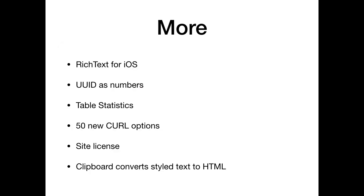We got a few more functions. Our rich text functions for working on RTF files have been upgraded for iOS. FileMaker introduced UUIDs as numbers with FileMaker 17, so I quickly made the same functions for older FileMaker versions, as well as a function to convert between the number and the UUID as text. We got a function to create statistics on a table — how many containers you have, how many bytes they use, how many text fields and how much text is in a table. We added 50 new curl options; curl has over 200 options and now they're all in the plugin. We also added a site license, and our clipboard functions have been upgraded to convert automatically between styled text and HTML.